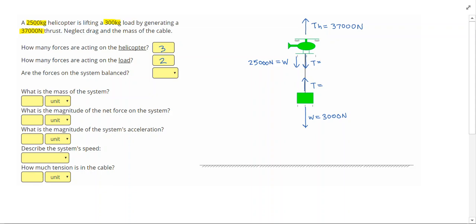Are the forces on the system balanced? Well, the problem does not say that the object is moving with a constant speed or at rest. And I also notice I have different amount of force acting upwards and downwards, so I'm going to say no. The forces are not balanced.